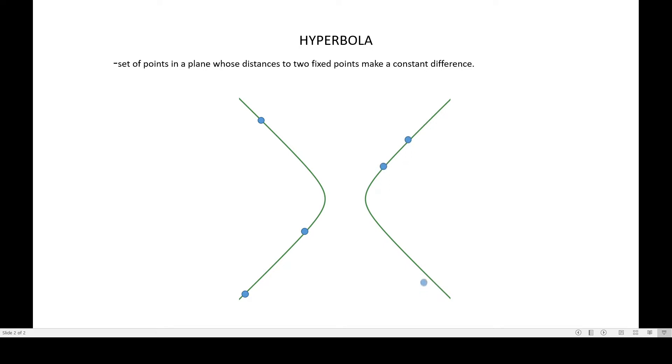So I have here six points in the conic section or in this curve. Now the two black points on the screen are the fixed points of our hyperbola. When we say fixed points, these are the foci of our hyperbola.